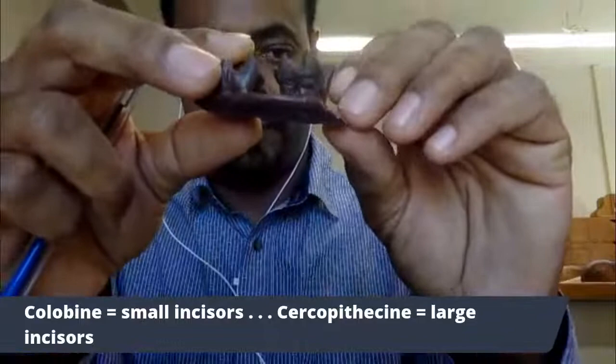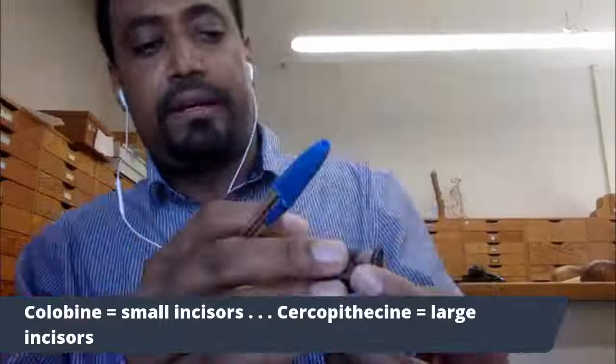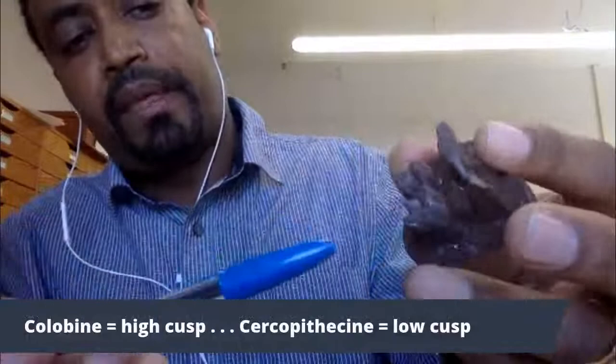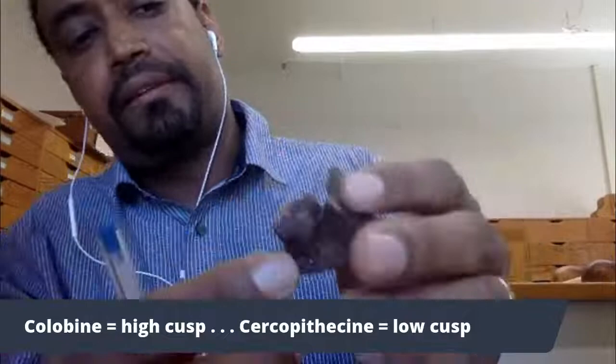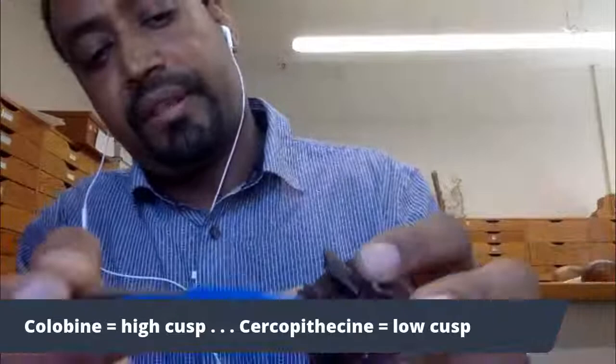To review the key features: look at the ridges connecting the two cusps, the height of the cusps, the cusp relief, the proximity of the cusps to each other, and the size of the incisor. We're starting to get some assessments in — we have one vote for a colobine, another vote for colobine, and a vote for cercopithecine. Another cercopithecine vote as well.